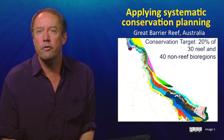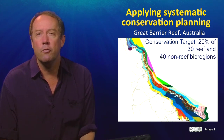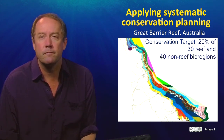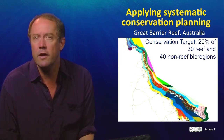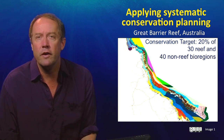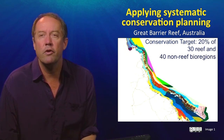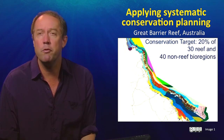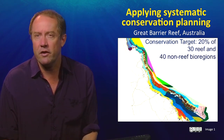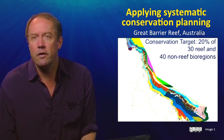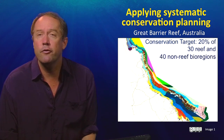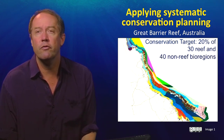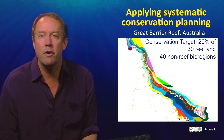Let's have a look at applying these principles in the real world to the Great Barrier Reef. Before 2004, only 5% of the Great Barrier Reef was conserved in no-take areas. In the mid 1990s, Senator Robert Hill, who was the Environment Minister at the time, set the objective of building a systematic marine protected area system for all of Australia, and he started pushing the agenda for the Great Barrier Reef in the late 1990s. By 2004, there was a completely new marine protected area system built using the principles we've discussed.